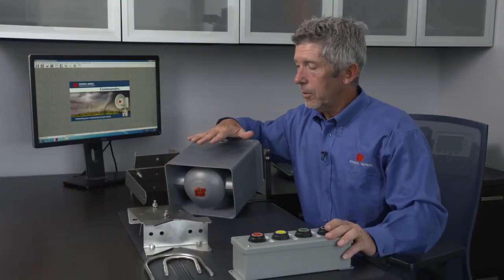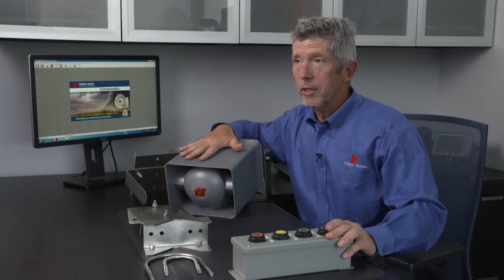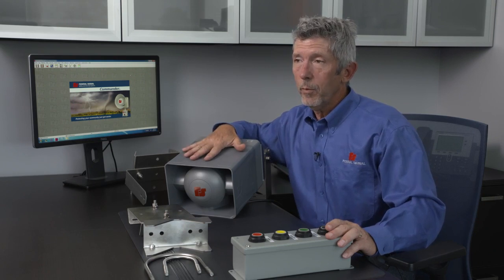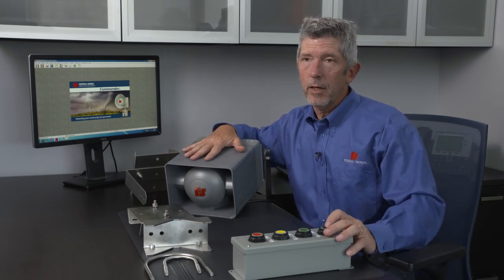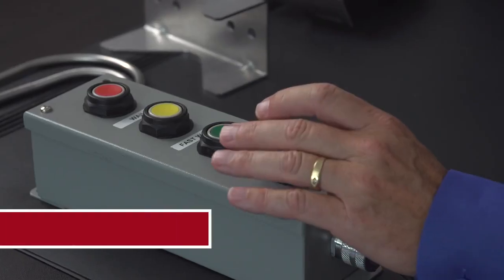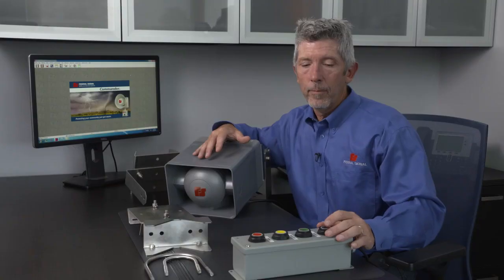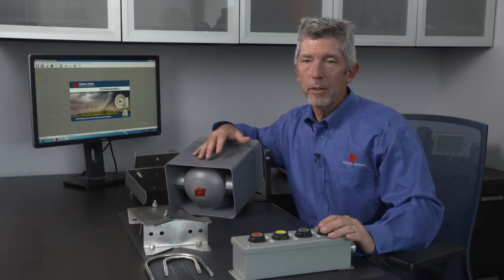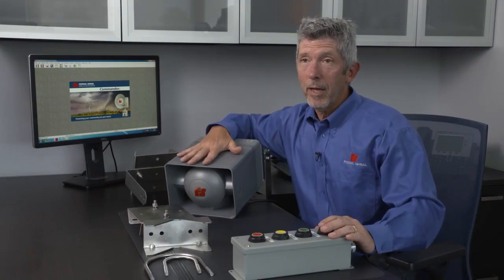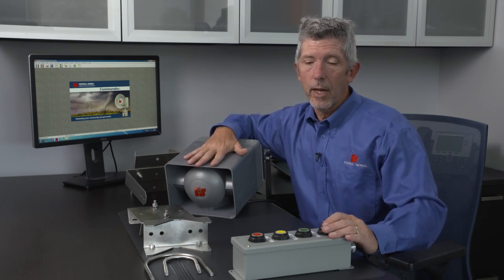So the next thing to show is setting up the device using either momentary or continuous inputs. The first input we have set up on this device is set up for momentary. So what that means is that your sensor or device only gives you a momentary output. So when I hit this button momentary, it's only going to play the message for the duration of time that's programmed into the IP100.